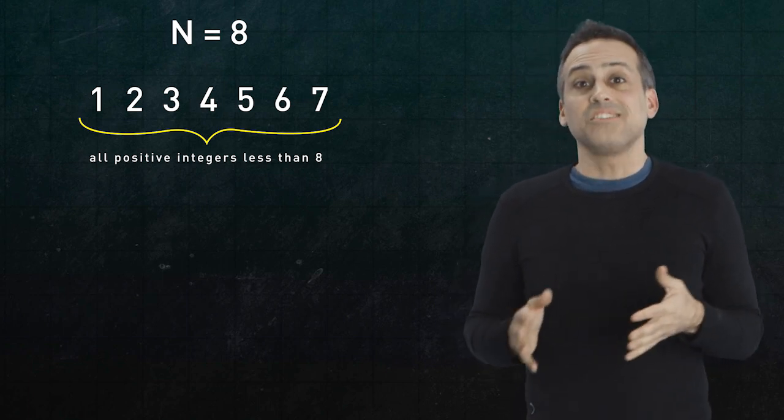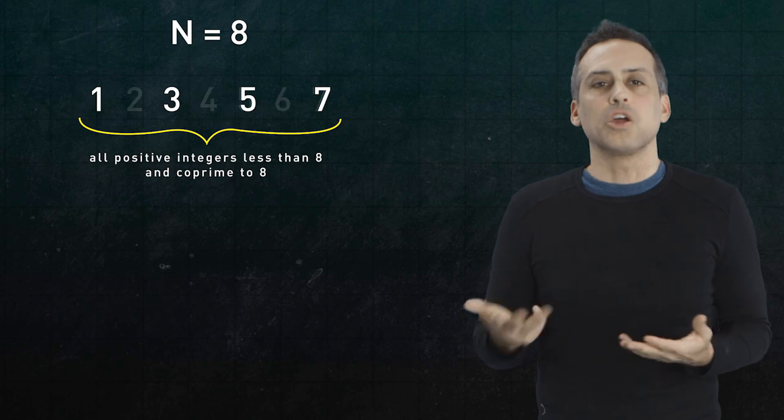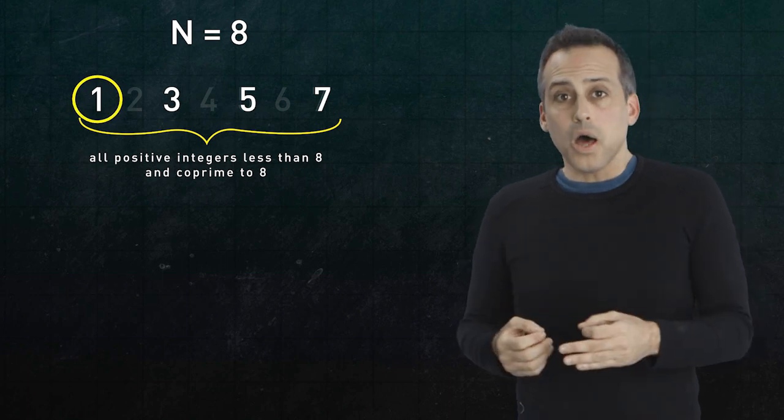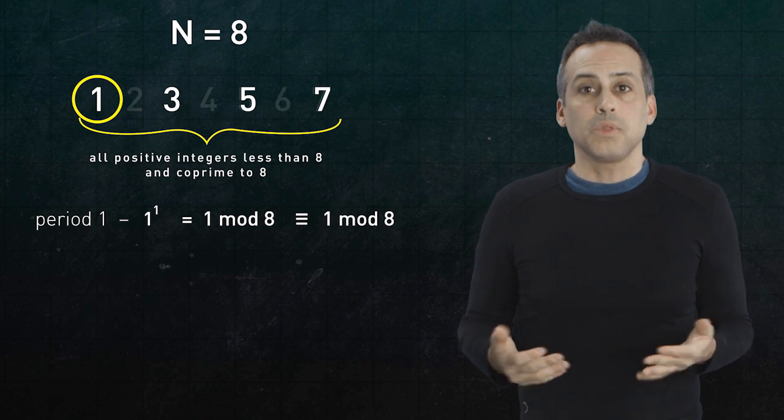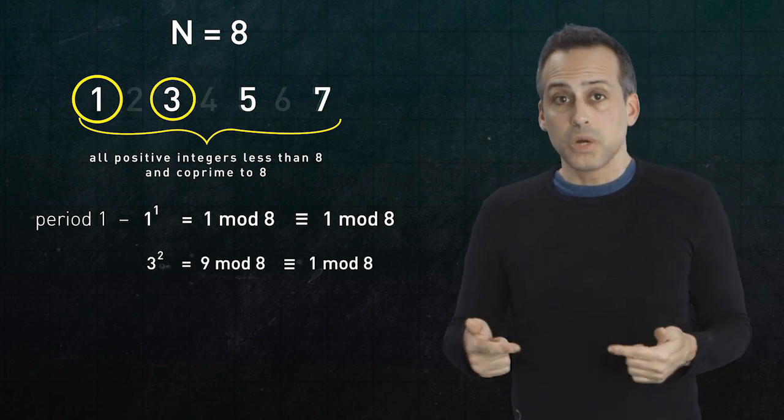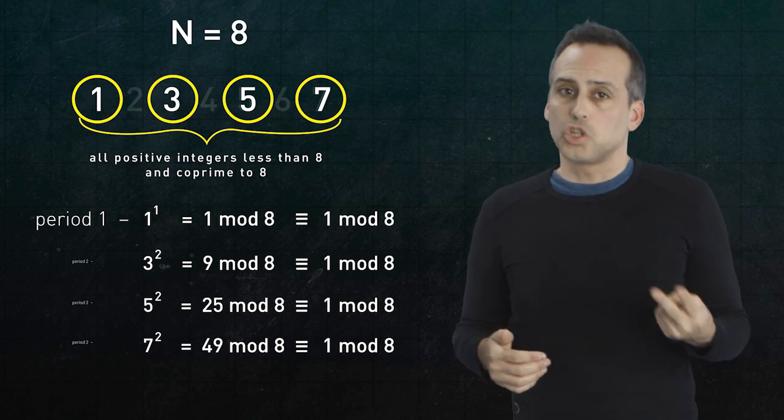For example, suppose that n is 8, to which 1, 3, 5, and 7 are all coprime. 1 has a mod 8 period of 1, since 1 to the 1 is always 1. And some quick arithmetic shows that 3, 5, and 7 each have a mod 8 period of 2.